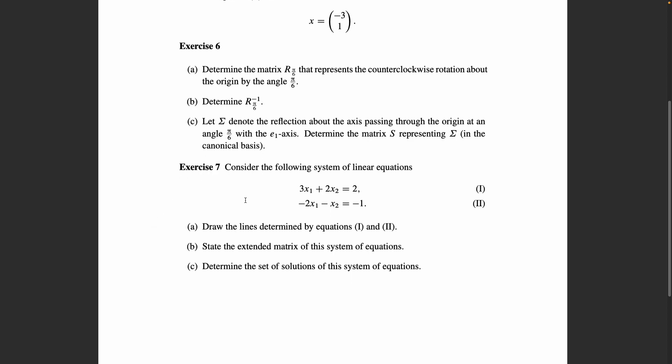And finally, just solve this system of linear equations: 3 times x1 plus 2 times x2 equal 2 is the first equation, and minus 2x1 minus x2 equal minus 1 is the second equation. Draw the lines that are determined by these two equations 1 and 2, then state the extended matrix for this system of equations, and finally determine the set of solution for this system of equations. In chapter three you will learn everything you need to do this.